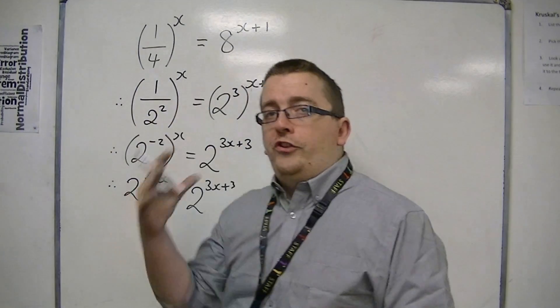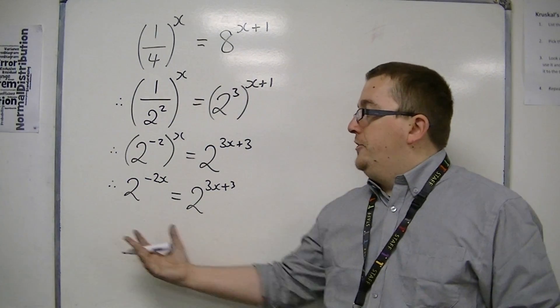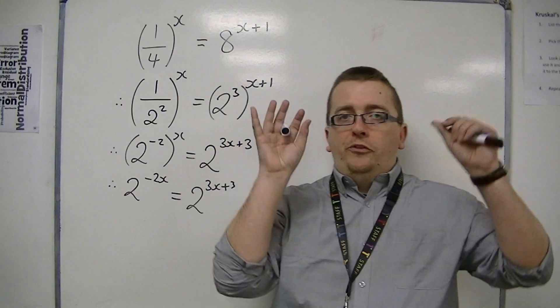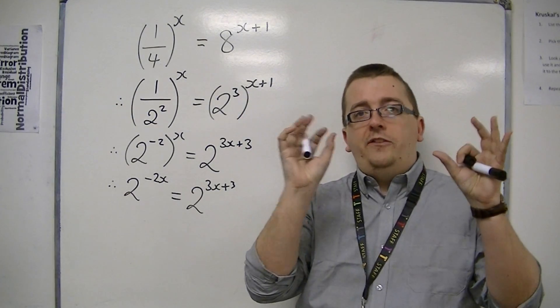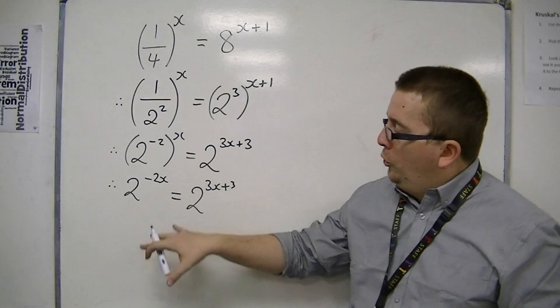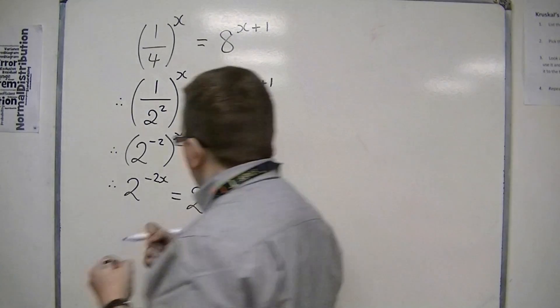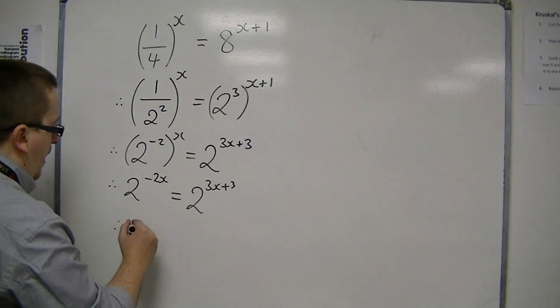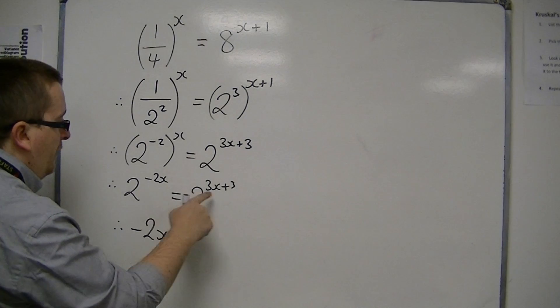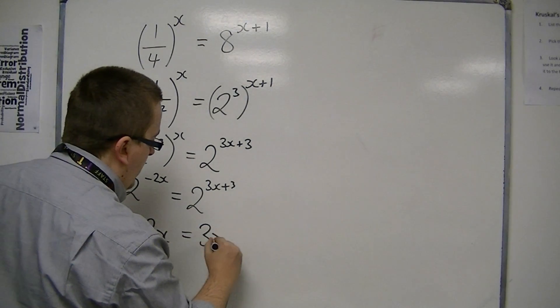So now I've got 2 to the something is 2 to the something else. Those powers, those indices, must be the same in order for equality to hold. And so that means that the minus 2x must be the same as the 3x plus 3.